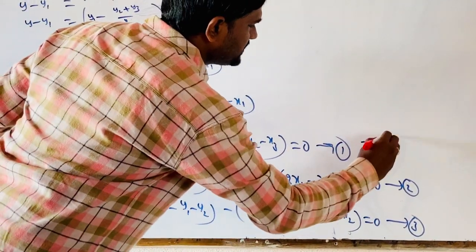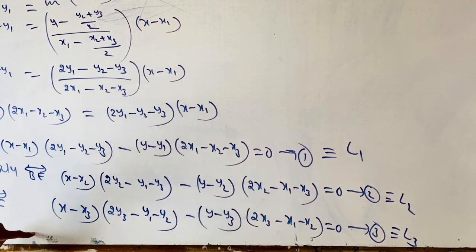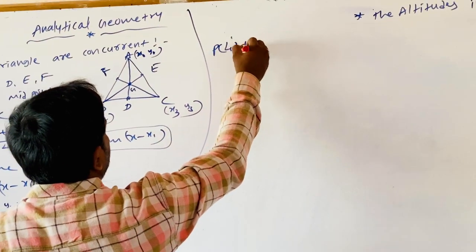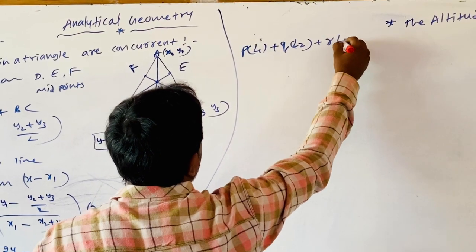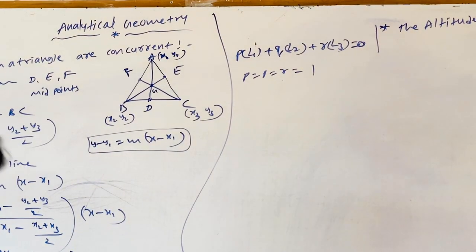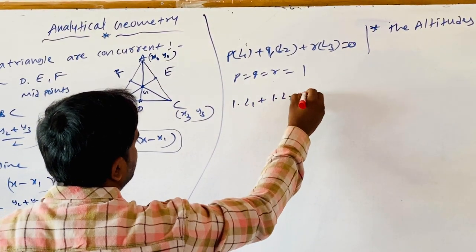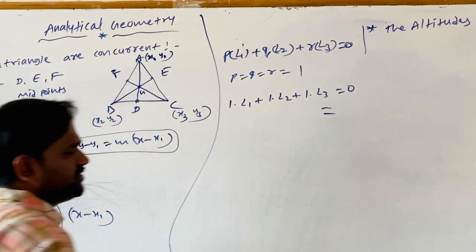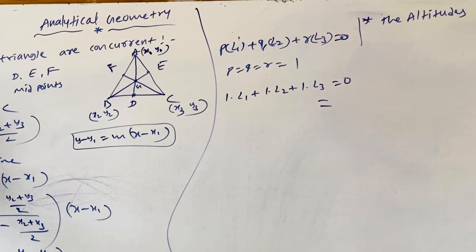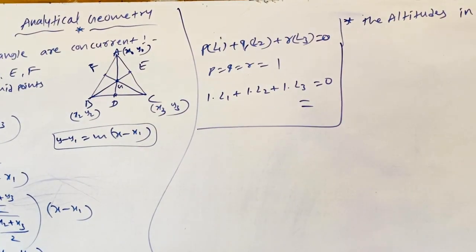We denote these as L1, L2, L3. Using the condition for three concurrent lines — P·L1 + Q·L2 + R·L3 = 0 — where P = Q = R = 1, it becomes 1·L1 + 1·L2 + 1·L3 = 0. By adding these three equations, we definitely get 0. Therefore, we can say that the medians in a triangle are concurrent.